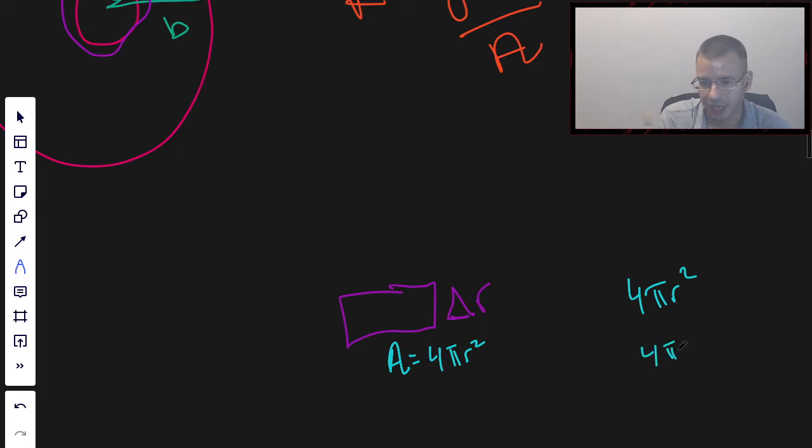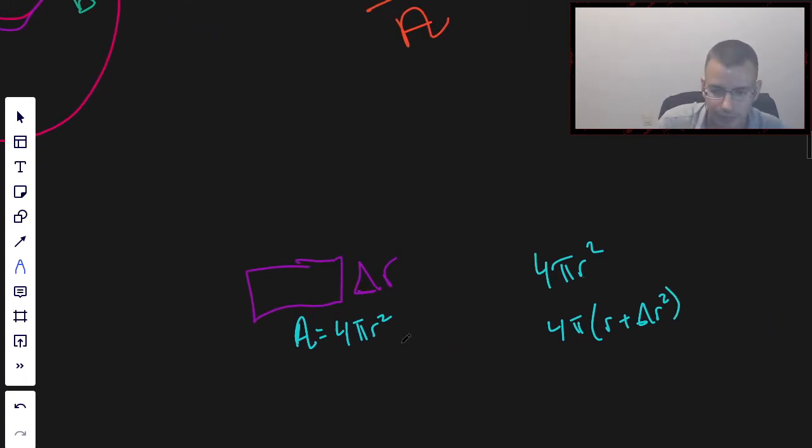The outside would be 4π(R + ΔR)², which would be 4πR² plus ΔR times R plus ΔR². These both have delta R in them, so when you take the limit as delta R goes to zero, those become zero.